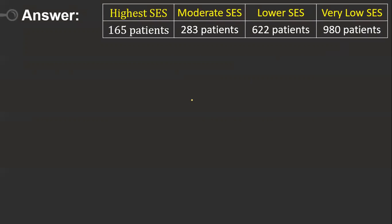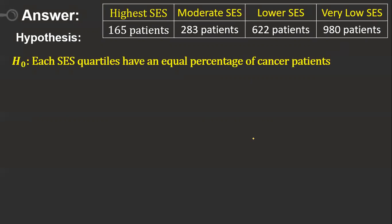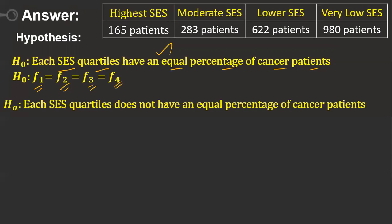Now we frame the hypothesis. Null hypothesis (H₀): each SES quartile has an equal percentage of cancer patients, meaning the frequencies from all four categories are equal. Alternative hypothesis (H₁): each SES quartile does not have an equal percentage of cancer patients. Alpha is set at 0.05.